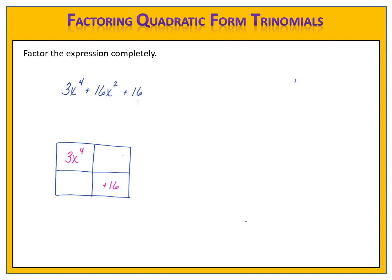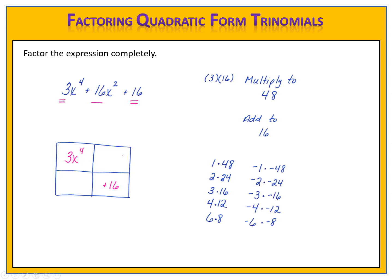I need to figure out what goes in the other two boxes. 3 times 16 is 48, so I need numbers that multiply to 48. The middle term is 16, so I need numbers that add to 16. My list: 1 times 48, 2 times 24, 3 times 16, 4 times 12, and 6 times 8, plus all the negative counterparts. I'm looking for the pair that adds to positive 16 — that's 4 and 12.